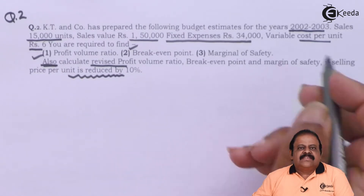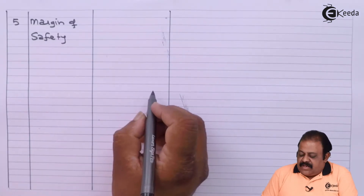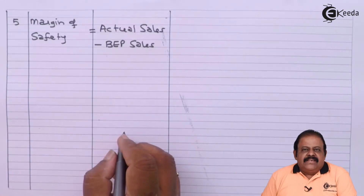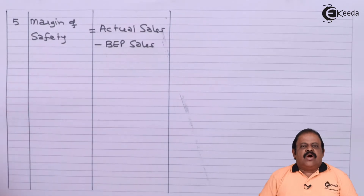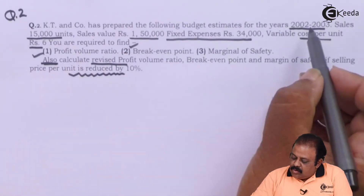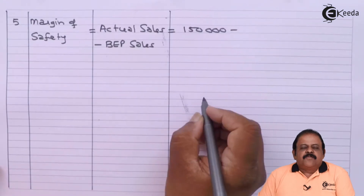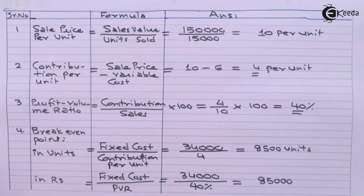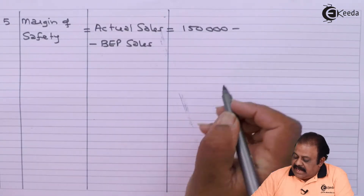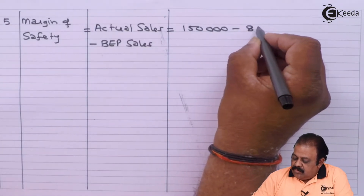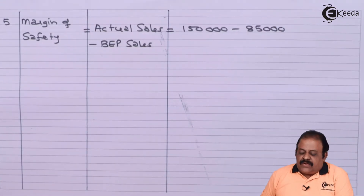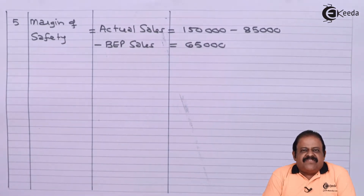Next we are required to find out margin of safety. The formula for margin of safety is actual sales minus break-even point sales. Actual sales is ₹1,50,000 and break-even point sales we calculated is ₹85,000. So margin of safety is ₹65,000.